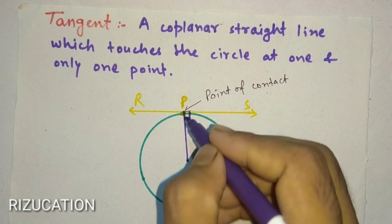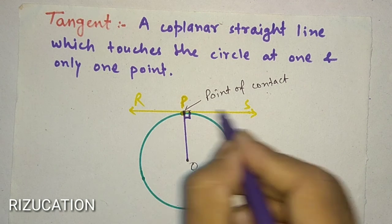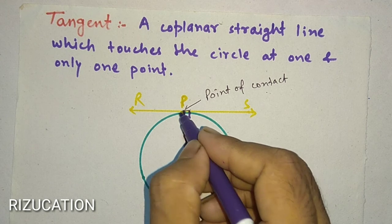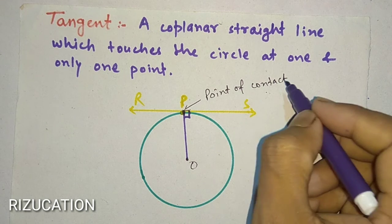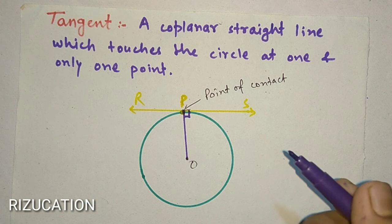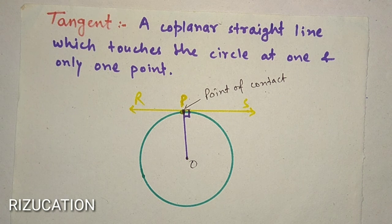And the point which is common between the line RS and the circumference of the circle is known as point of contact. And that's all about tangent, thank you.